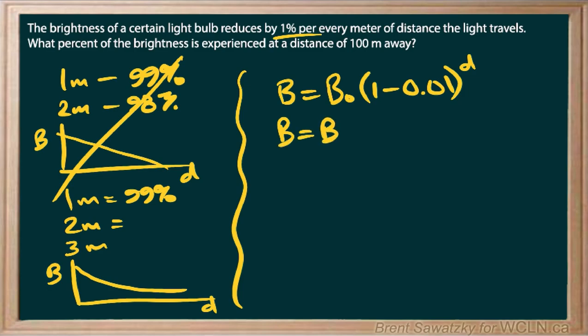We can clean it up a little bit and say this would be 99%. We're interested in what the brightness is at 100 meters, so let's put 100 in for D. And so this is what we wanted. We just keep multiplying those on. If we plug this into our calculator, that is 0.99 to the power of 100, we would get 0.37.